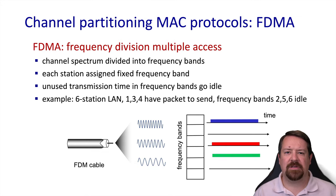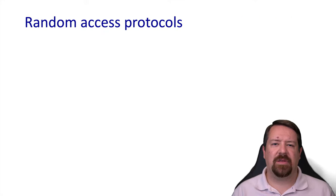Another simple scheme is FDMA, frequency division multiple access. Instead of dividing time, the frequency band is divided up into channels. This is exactly how broadcast radio or television works, where multiple stations can broadcast simultaneously and the receiver just tunes into the correct channel. Again, this is suitable for constant bitrate applications, but if a particular transmitter doesn't have anything to send, that channel will go idle and the bandwidth is wasted. Note that this is also how bandwidth is divided on broadcast cable networks. There's also CDMA, code division multiple access, which is widely used in cellular networks, but we'll look at that in the next chapter on wireless networks.